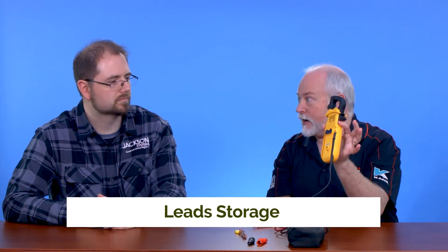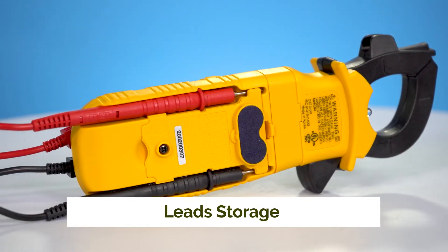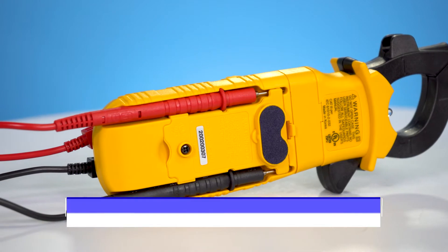The other thing we have for storage leads is we do have the storage leads will snap in the back. Okay. For storage. So nice aspect. The back too is for your batteries. What type of battery do we have? Standard AAA batteries. Most guys are going to have several of those on their truck.